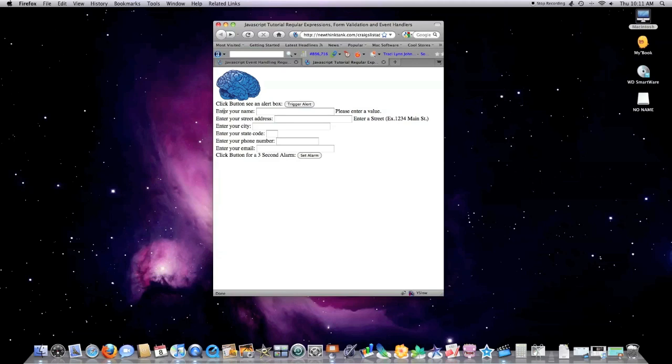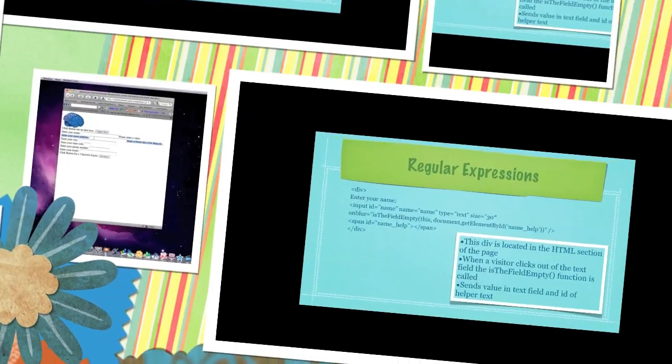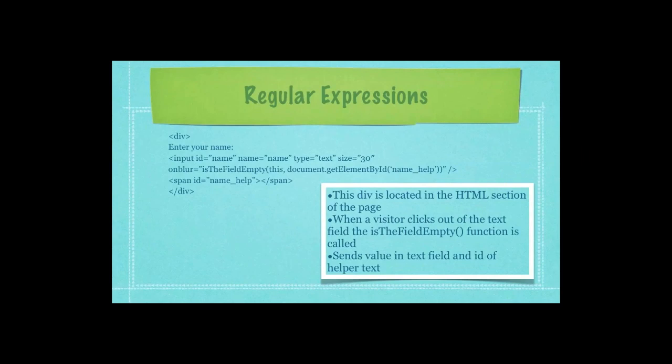Each of these areas of the web page are associated with different div files. If that doesn't make any sense, check out the HTML tutorial. Whenever people do not enter the proper information into these text boxes, that is whenever these functions that I'm talking about right now are triggered. As you can see here, whenever an OnBlur event handler is triggered, the IsTheFieldEmpty function is fired. And what is it passed? It's passed the value of the text area and the identification name for the helper text.